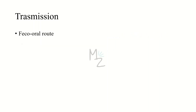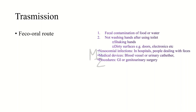This bacterium is transmitted via the fecal-oral route. Reasons include fecal contamination of food or water, not washing hands after using the toilet, then touching other surfaces or shaking hands with people. Nosocomial infections occur in hospital settings where people deal with feces — lab workers are at risk, and medical devices such as blood vessel catheters or urinary catheters can transfer infection. Certain procedures like GI or genitourinary surgery also play a role in transmission.